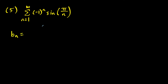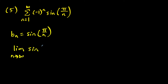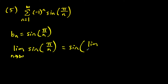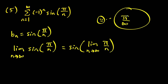For the last question, b sub n is sine of pi over n. The limit part is simpler: the limit as n goes to infinity of sine of pi over n. We can use composition of functions — this equals sine of the limit as n goes to infinity of pi over n. Since pi over n goes to zero, this becomes sine of zero, which equals zero. That condition checks out.